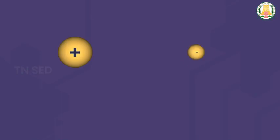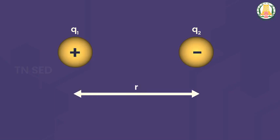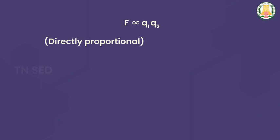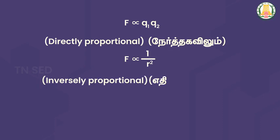In free space, there are two point charges at rest, Q1 and Q2. The force is directly proportional to Q1 and Q2. Coulomb's force equals F = K × Q1 × Q2 / R².